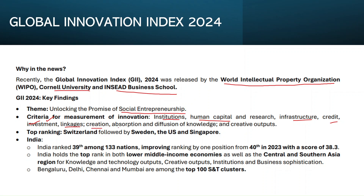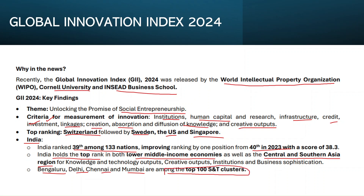The top countries in GII 2024 are Switzerland (1st), Sweden, the US, and Singapore. India ranked 39th among 133 nations, an improvement from 40th in the 2023 edition. India holds the top rank among lower-middle-income economies and in the central and southern Asia region. Cities Bengaluru, Delhi, Chennai, and Mumbai are among the top 100 science and technology clusters.